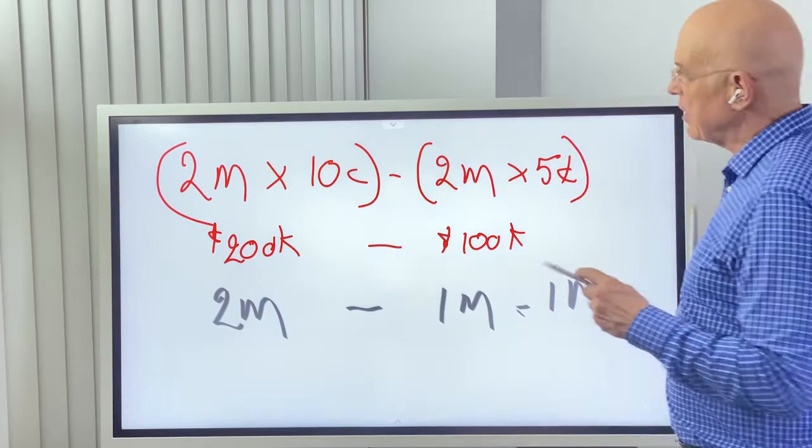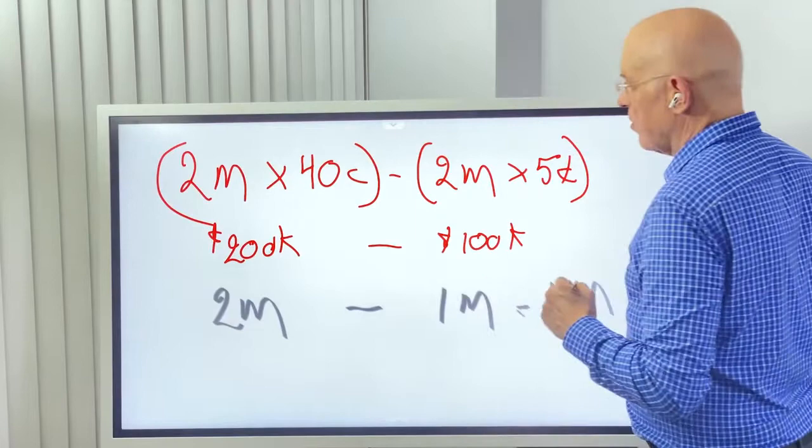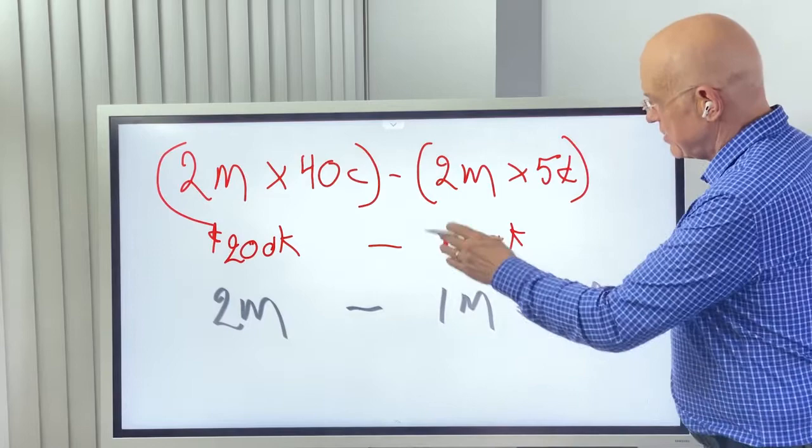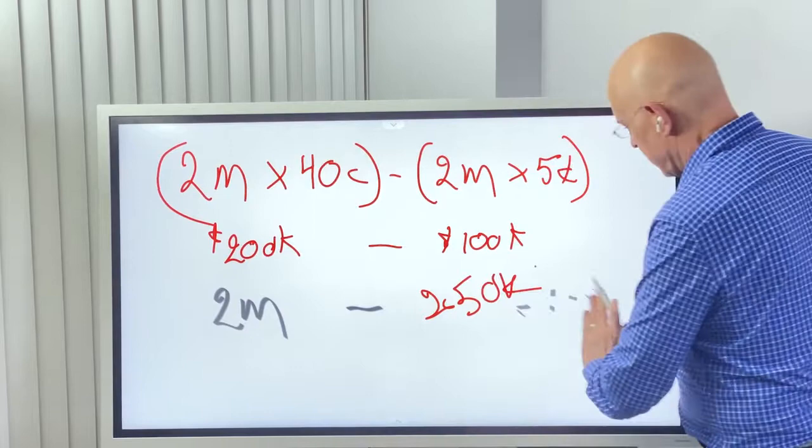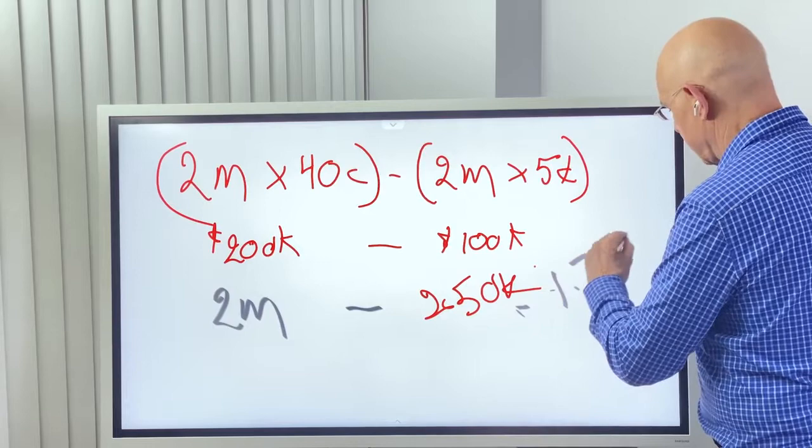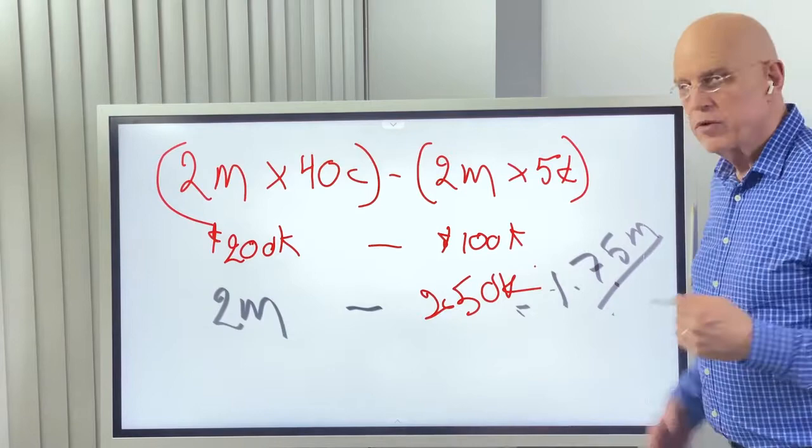Let's say if we go to 40 cents here. Now, you didn't have to give up 1 million shares, because you're only giving up 1 eighth of 2 million, not 1 half, which is 250,000 shares. Which means here, you now have 1.75 million shares. More shares, right?